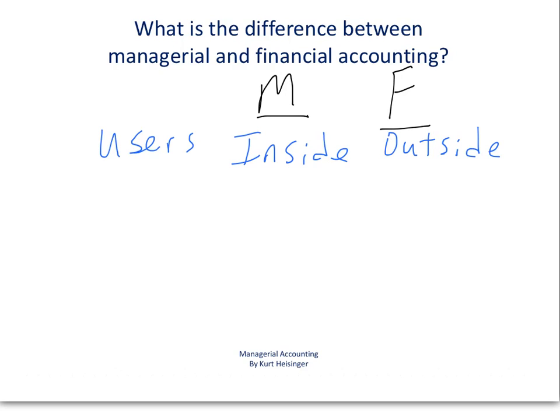What about accounting rules? For Managerial Accounting, there really are no specific rules that we have to follow other than ethical rules. In Financial Accounting, of course, we have to follow generally accepted accounting principles because we are providing information in the form of financial statements to outside users, and they rely on that information to make decisions.